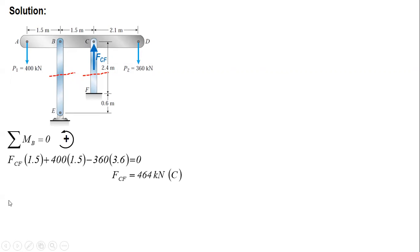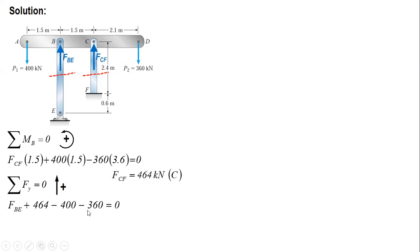After this, summing vertical forces — and again, FBE is also compression because of the downward forces. Calculating, FBE is 296 kN, compression.